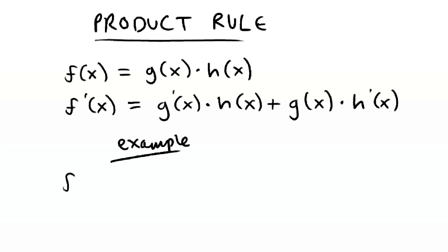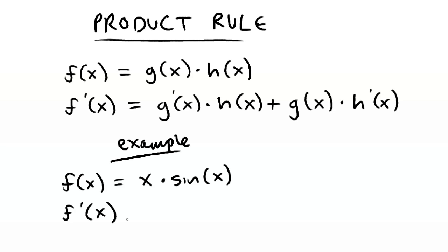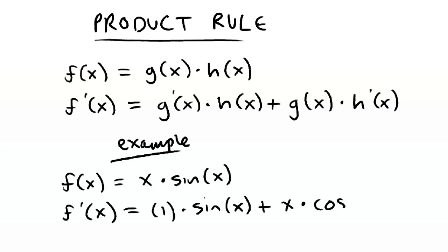For example, if f of x is equal to x sine of x, then f prime of x is equal to the derivative of the first function, 1, multiplied by the second function, sine of x, plus the first function, x, multiplied by the derivative of the second function, cosine of x.